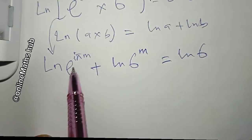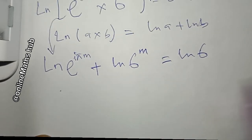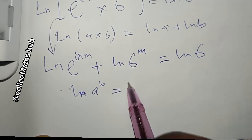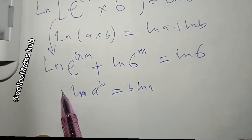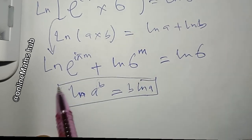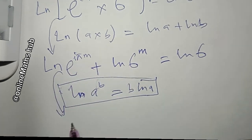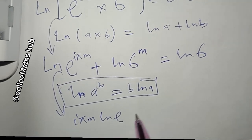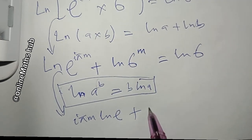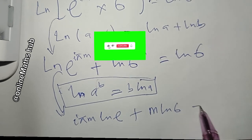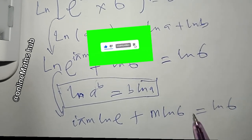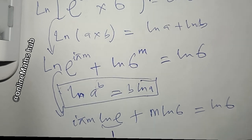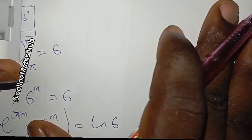I also apply the power rule: natural log of a to the power b equals b times natural log of a, so the exponent comes down. This gives i·π·m times natural log of e, plus m times natural log of 6, equal to natural log of 6. Since natural log of e equals 1, the first term simplifies to i·π·m.